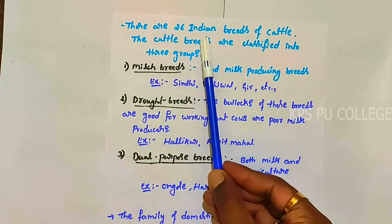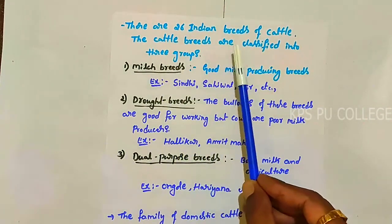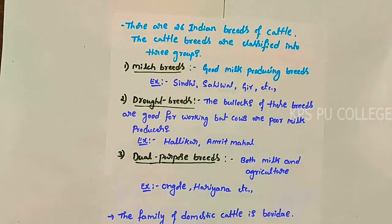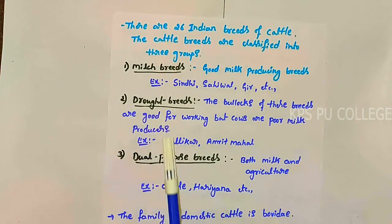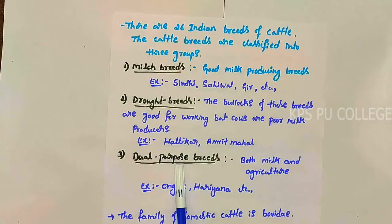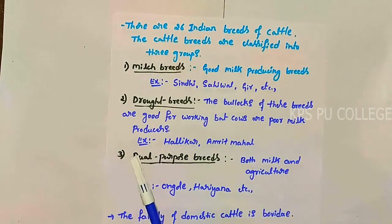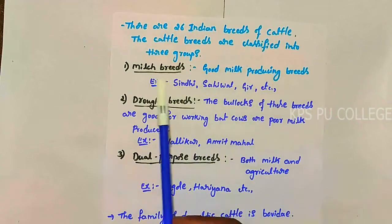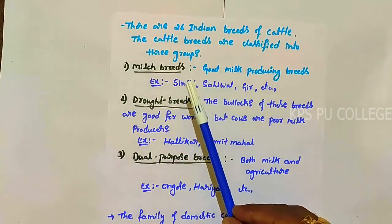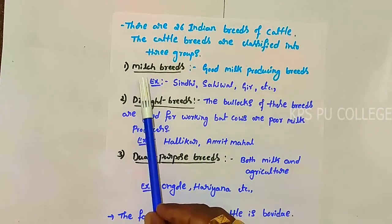There are 26 Indian breeds of cattle. These 26 Indian breeds of cattle are classified into three groups: milk breeds, draught breeds, and dual purpose breeds. Milk breeds are good milk-producing breeds — they are mainly reared for the milk purpose and have good milk-producing capacity.